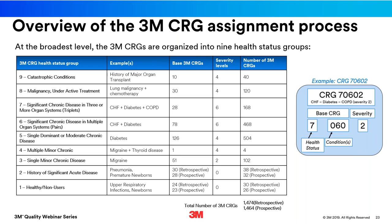CRGs are a five-digit code. For example, the CRG 70602: the first digit of seven means the individual is in health status group seven — three chronic diseases in multiple body systems. Zero-six-zero is specific to the combination of CHF, diabetes, and COPD. And two indicates the severity level for this individual is two.